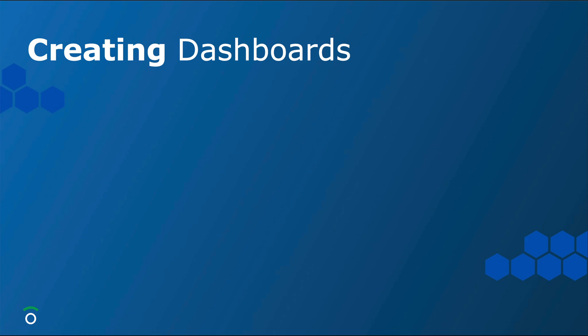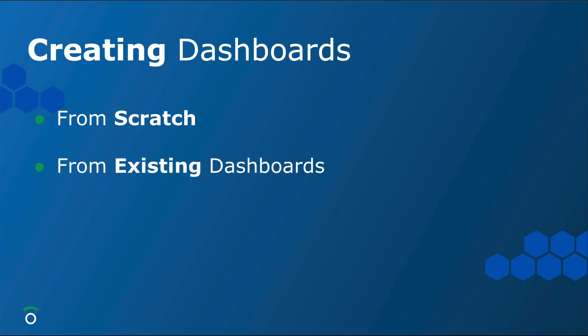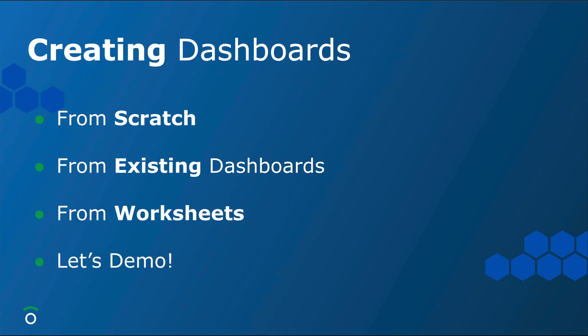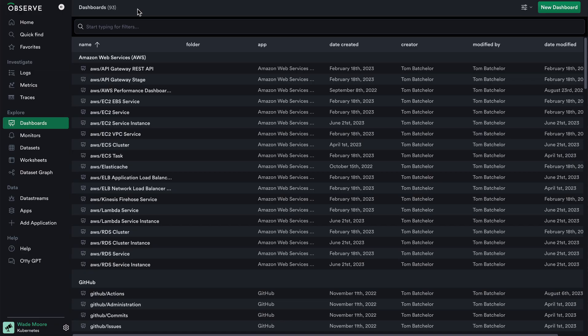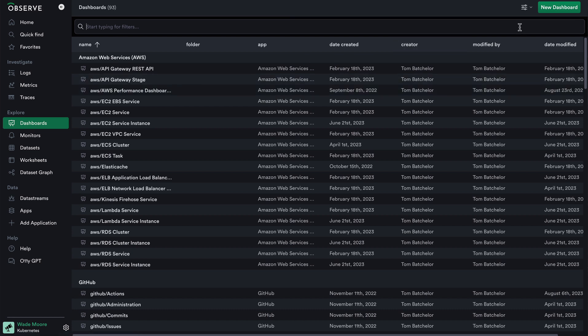Now that we've seen how to use a dashboard, we're motivated to understand how we would create one. To create a dashboard, we'll look at how to create one from scratch, from an existing dashboard, and from worksheets. Back in Observe at the dashboards tab under the explore menu, I can see the list of dashboards, but I can also create a dashboard from scratch by clicking the new dashboard button in the right-hand menu.